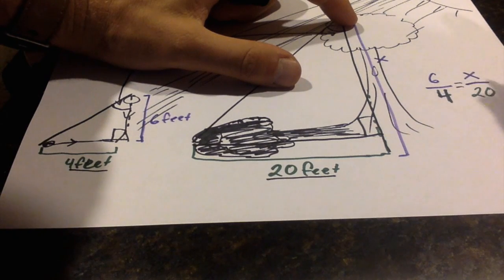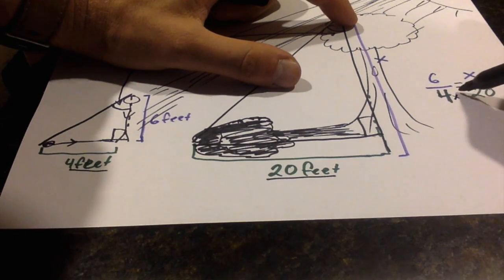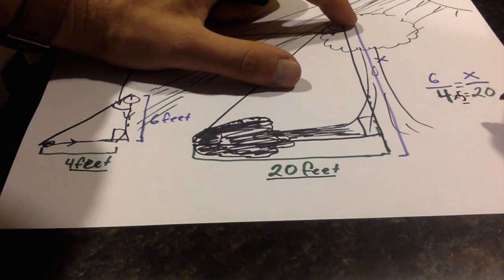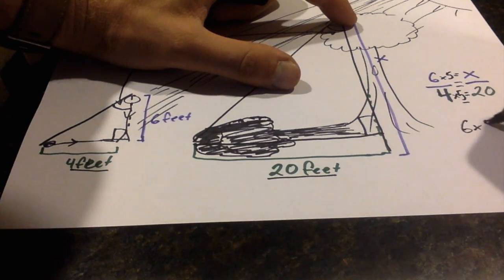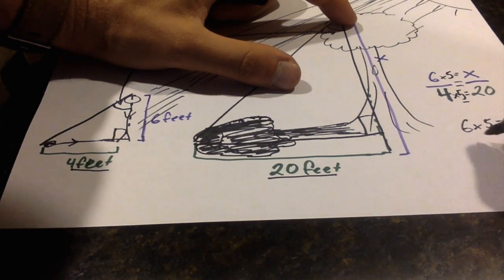One thing we can notice is that there's a relationship between four and twenty. Four times what gives us 20? Well, five. So I can do the same thing with the numerator. Six times five gives us x. Six times five equals 30, therefore 30 is equal to x.